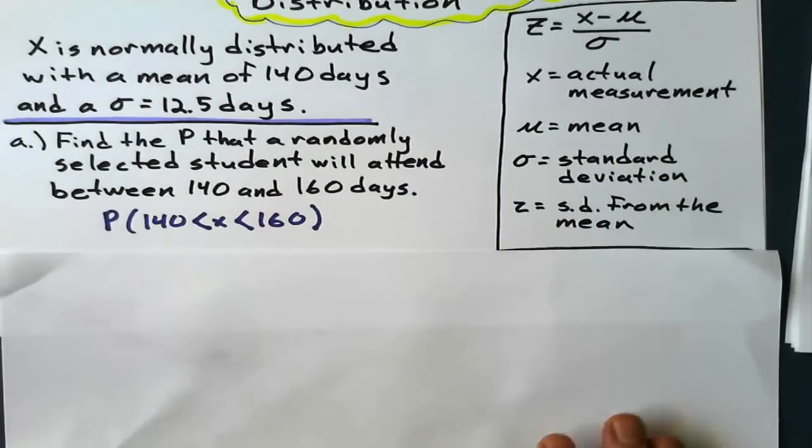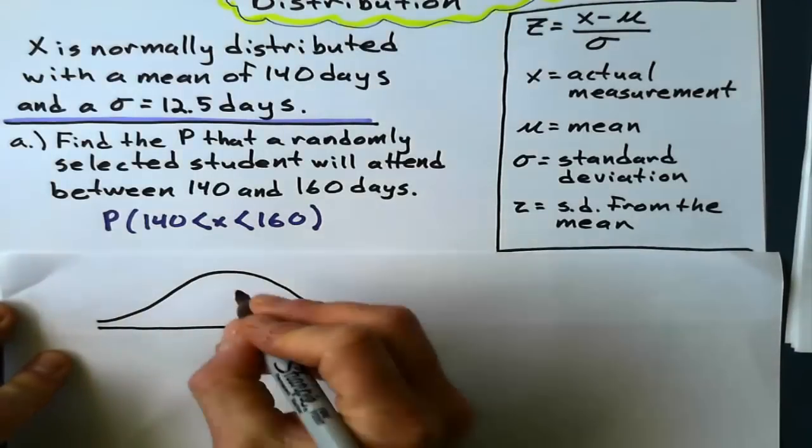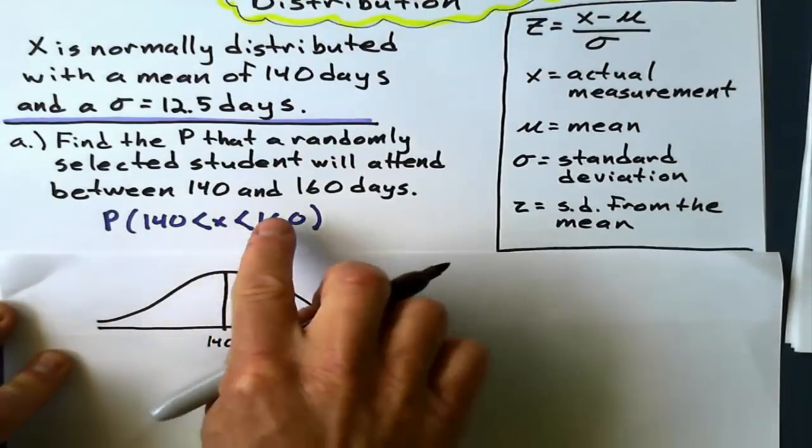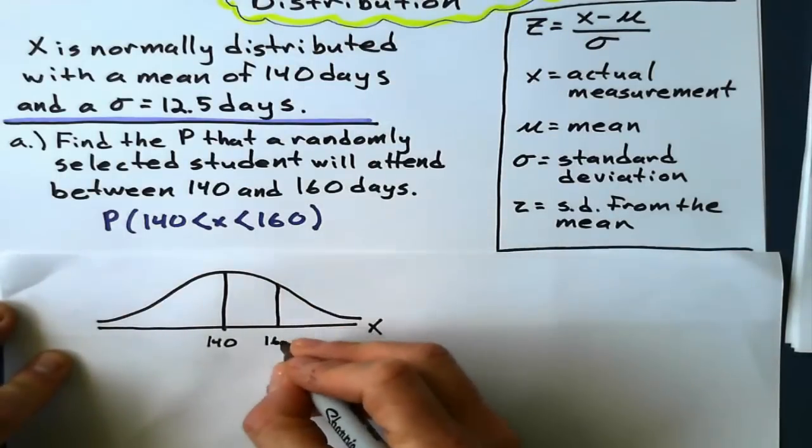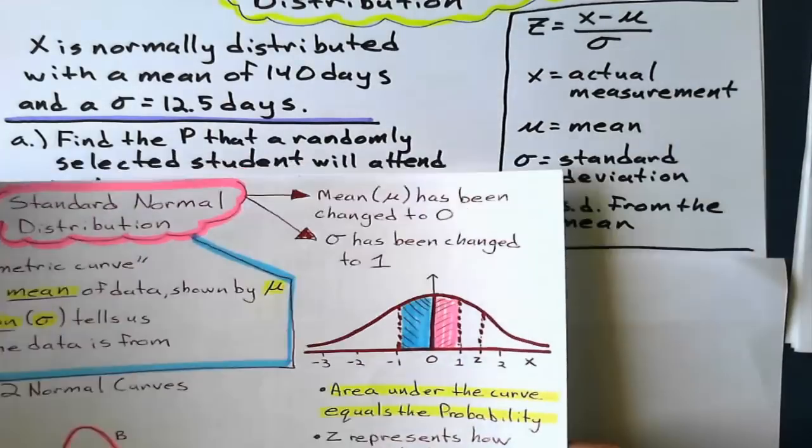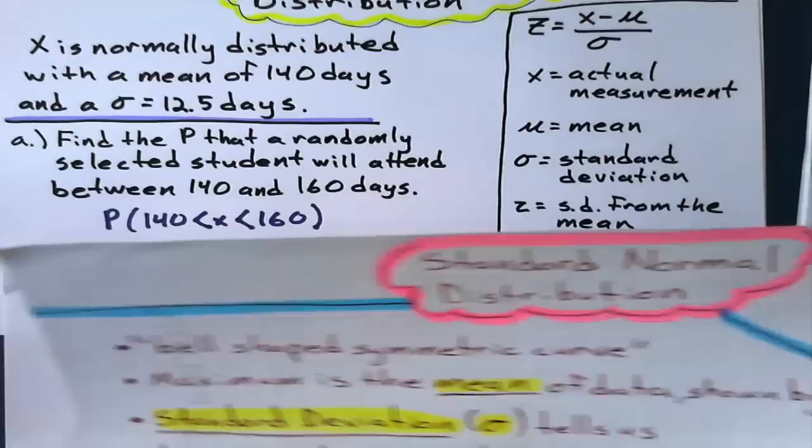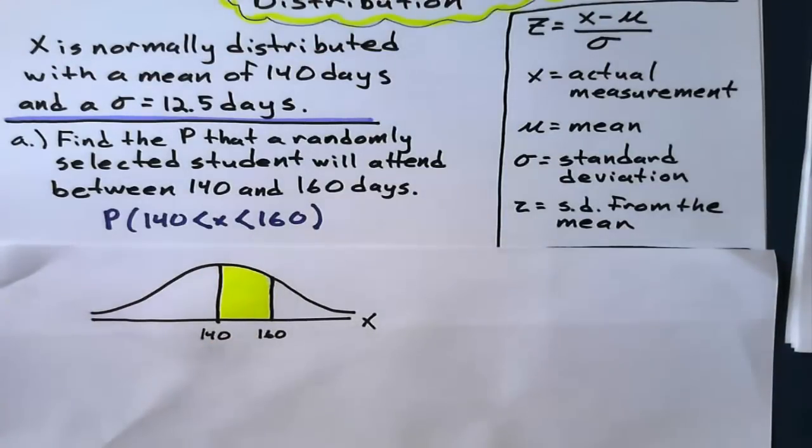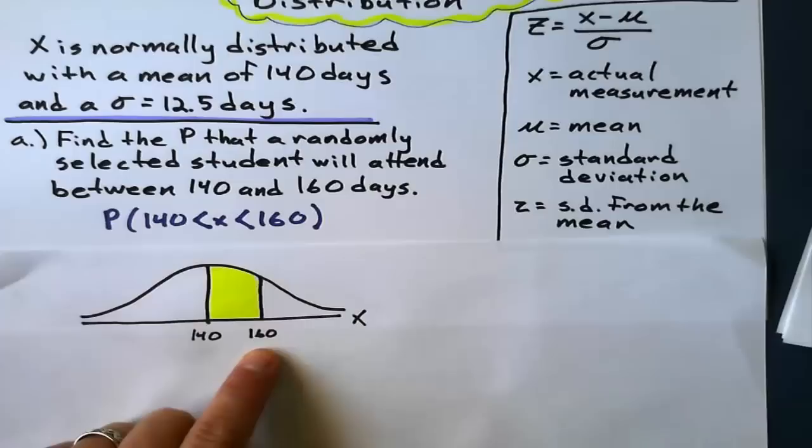Back to the problem. Let's draw our X curve first. Most commonly called a bell-shaped curve. We put an X there. My mean is 140. And my actual measurement X is 160. I'll just say it's right here. And I'm going to shade that in-between part. A reminder that the area under the curve equals the probability. That's why I shade it. So that shaded part is the probability. It's less than half, so it better be less than 0.5.